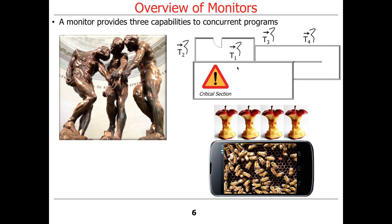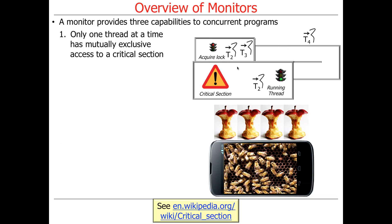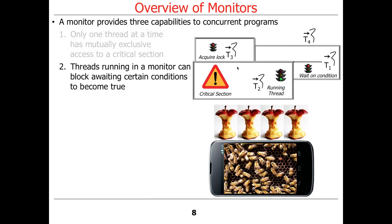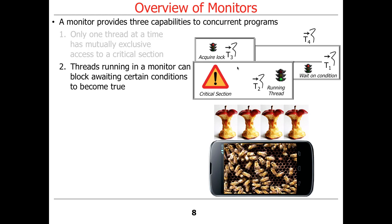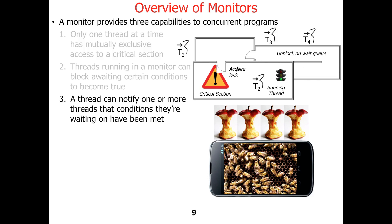A monitor provides three capabilities to concurrent programs. First, it ensures that only one thread at a time can have mutually exclusive access to a critical section. Second, it allows threads running in a monitor to block and step out of the monitor while waiting for certain conditions to become true — so thread T1 can be blocked waiting on some condition while T2 is running. Third, a thread can notify one or more threads that conditions they've been waiting on have been met.